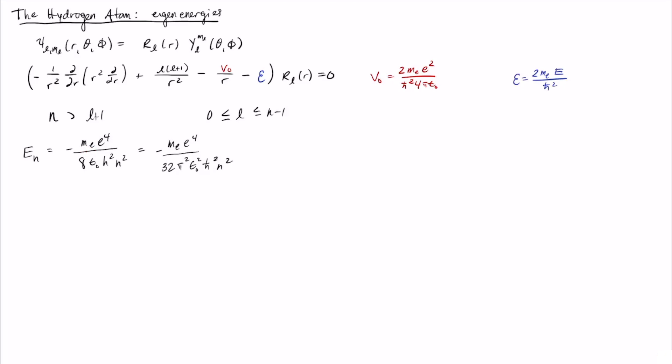Me is the mass of the electron. You get me times e to the fourth. So e is the charge on the electron. And you have divided by 8 epsilon naught squared times h squared times n squared. And then on the right is the same equation, but we've changed from h squared to h bar squared over here.